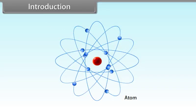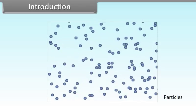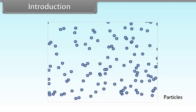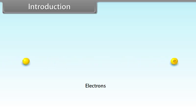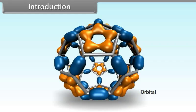Hey kids, today we will learn the quantum mechanical model of atom. Matter has dual behavior — wave as well as particle. Heisenberg's uncertainty principle is only applicable to small particles such as electrons. The region of the atom where the probability of finding an electron is maximum is called an orbital. Orbitals are characterized by a set of numbers known as quantum numbers. The energy, size, shape and orientation of the electron orbital can be specified by the use of three quantum numbers: the principal quantum number, azimuthal quantum number, and magnetic quantum number.